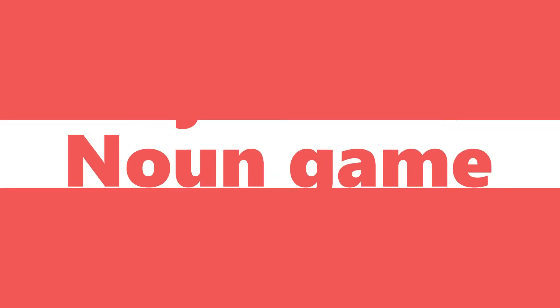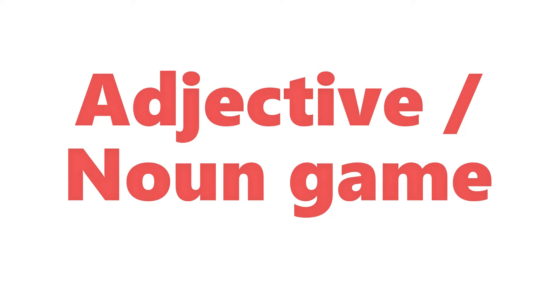I'll show you a little example of me playing with my partner - listen very carefully. My partner says the noun and I say the adjective. Table - wooden. Chair - comfy. Bed - cozy. Fire - hot. Water - fresh. Pause the video now and have a go at the Adjective Noun Game.